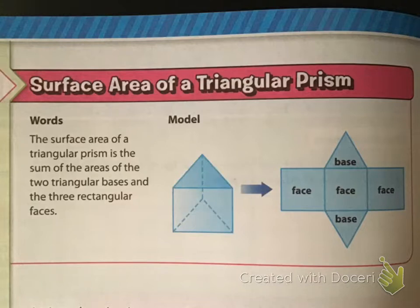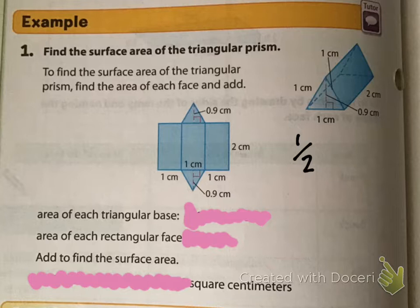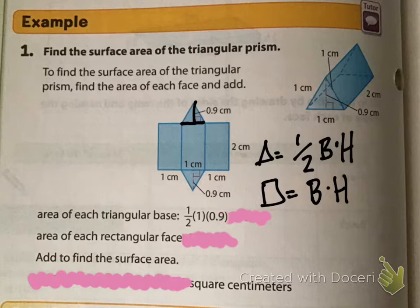Essentially, we're just adding up the area of all the sides. Let's look at this example problem. Find the surface area of the triangular prism. To find the surface area, we just have to find the area of each face and add. The area of the triangular base — we need to remember our area formulas. Triangles are one half base times height, and rectangles are base times height. Our triangles have a base of one and a height of 0.9. So the area of each triangular base is one half times one times 0.9, which gives us 0.45. We found half of 0.9.